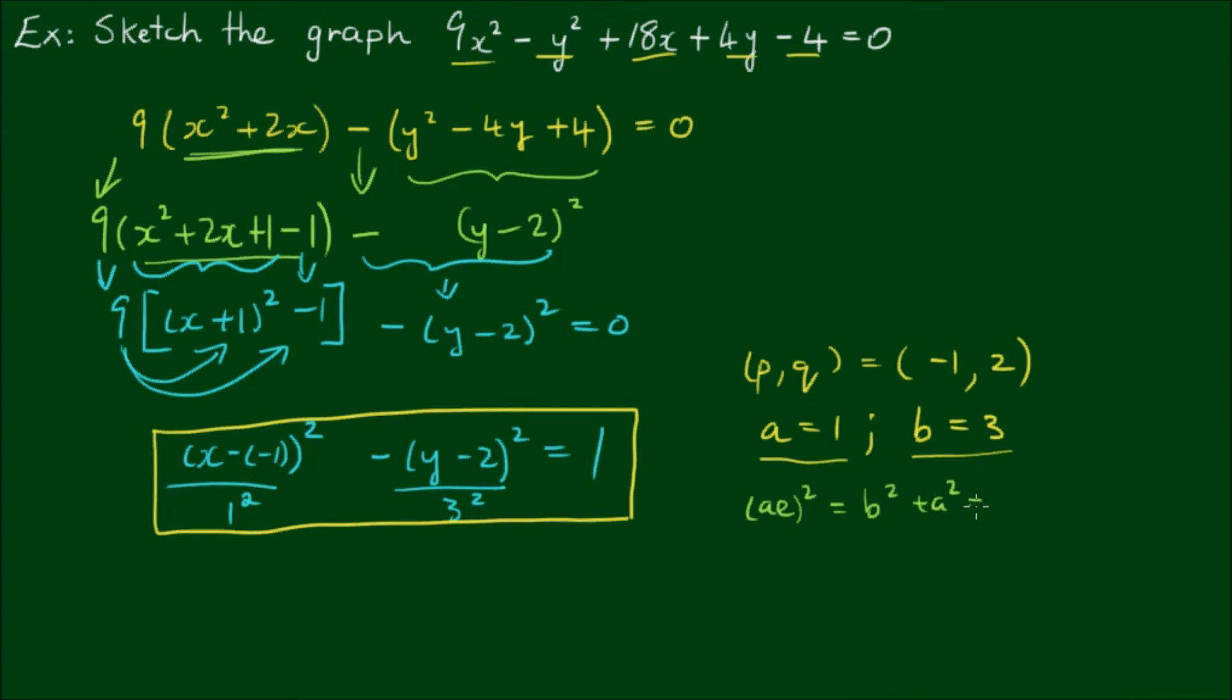Now the relationship (ae)² = b² + a² is still true for this hyperbola. So we can calculate this as b² = 9 plus a² = 1 equals 10. So ae = √10. And with a being equal to 1, the eccentricity is equal to √10, which evaluates approximately to 3.16.